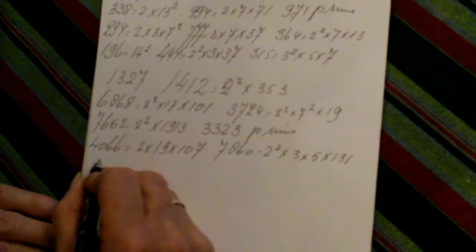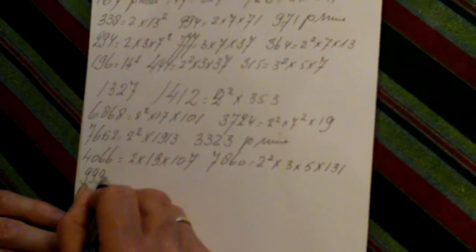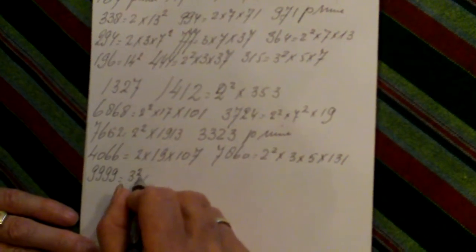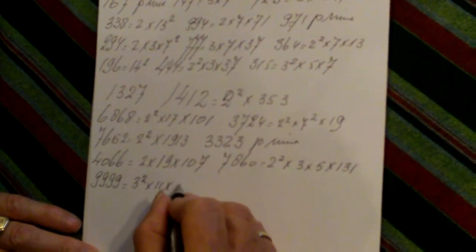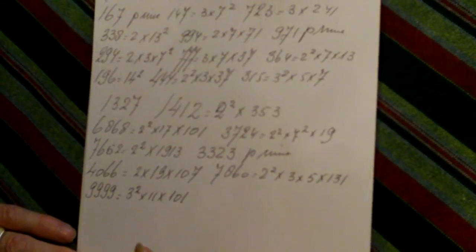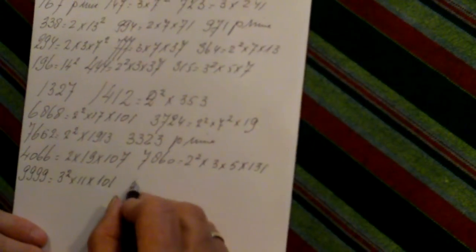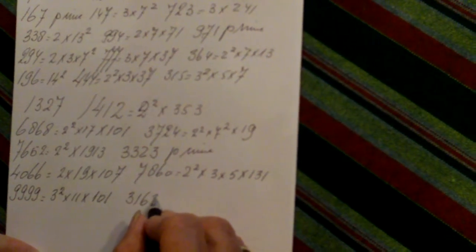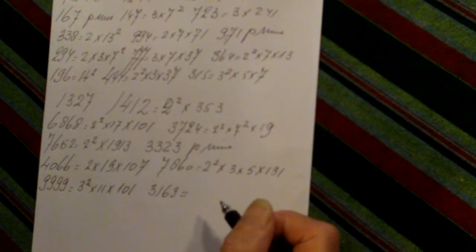9999 is three squared times eleven times one hundred and one. And the last one — 3163. Prime.